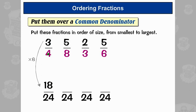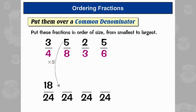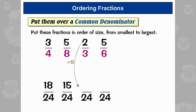Three-quarters is exactly the same as eighteen twenty-fourths. Next one: to get from eight to twenty-four you times by three, so do the same to the top — five times three is fifteen. Next: from three to twenty-four you times by eight — two times eight is sixteen. From six to twenty-four you times by four.